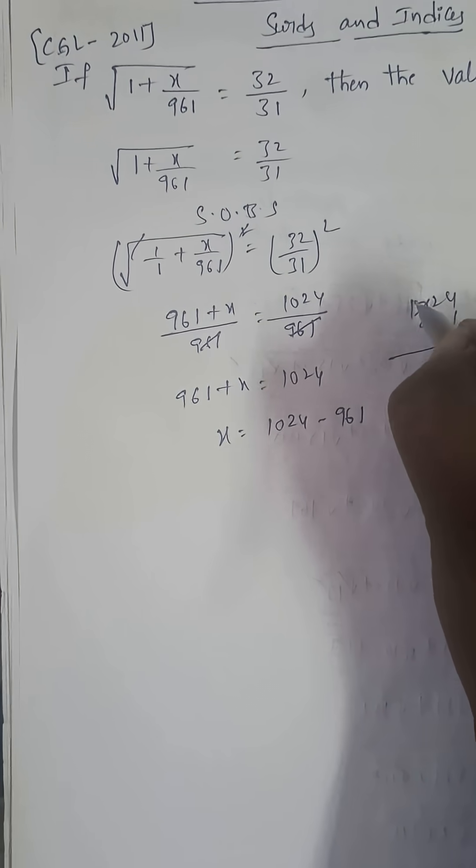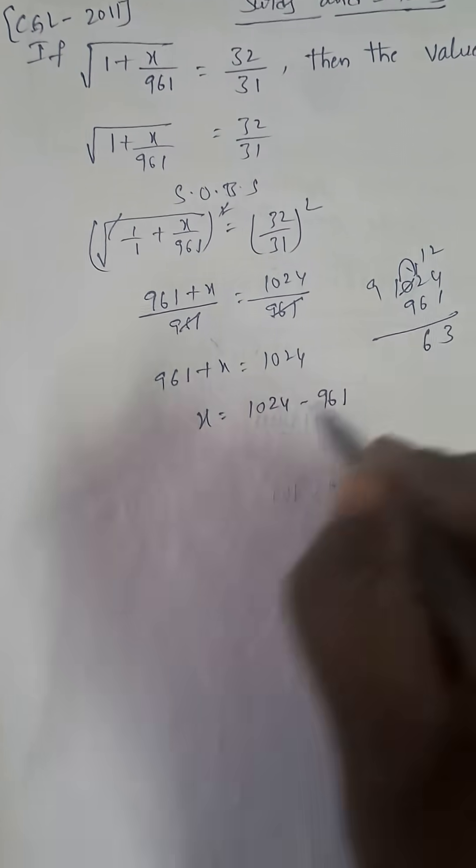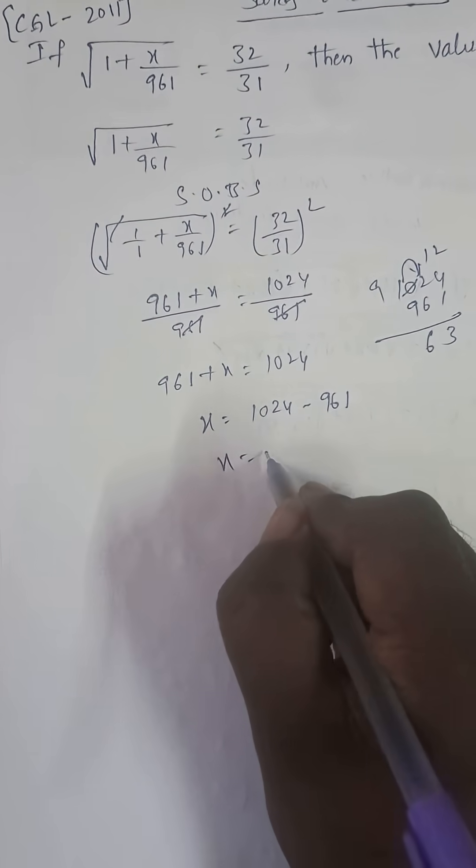3 take borrow 12, 6. 12 minus 6 is 6. So, x is equal to how much? 63.